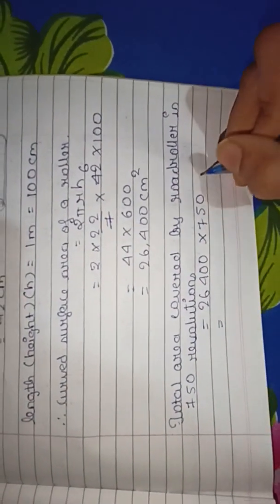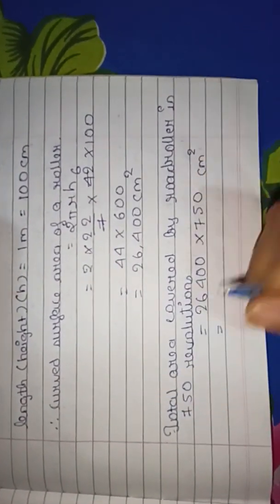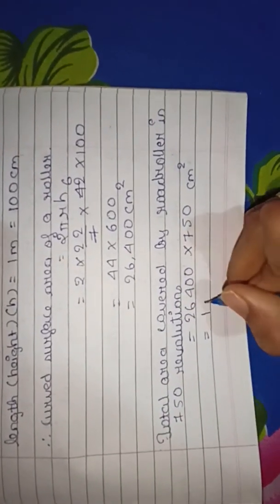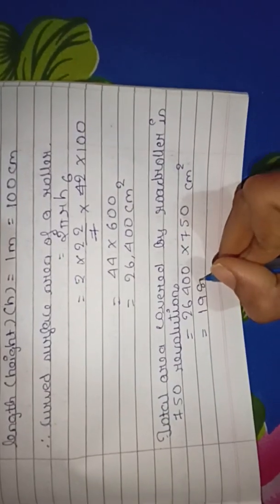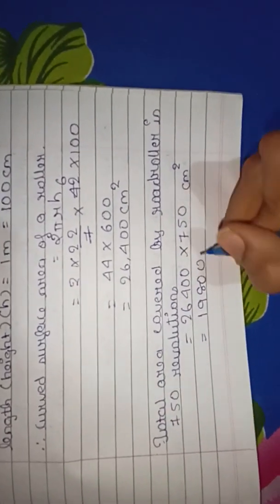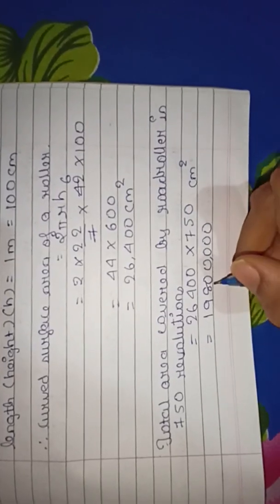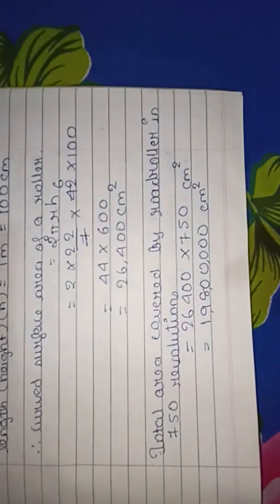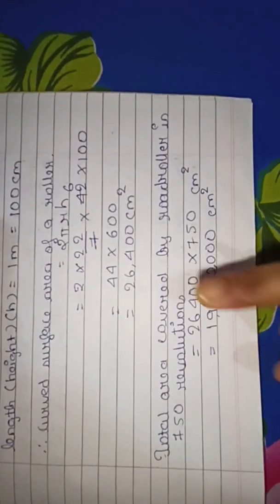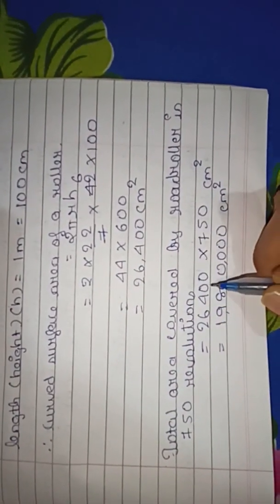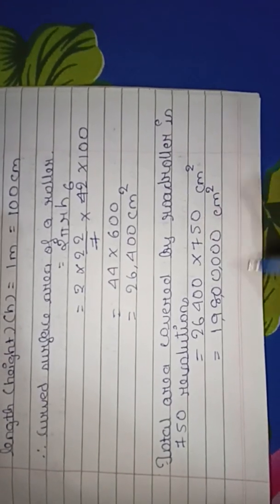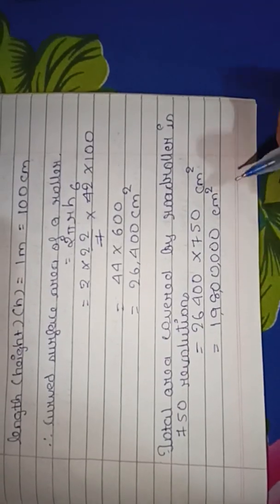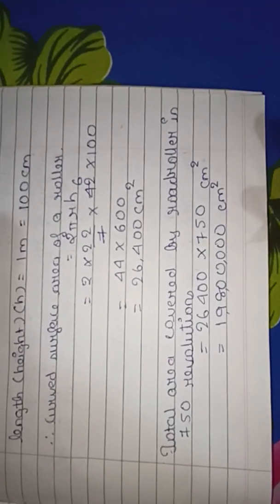Multiplying 26,400 by 750 gives us 1,980,000 cm². This is in centimeter square, which is a large number, so we convert it to meter square.